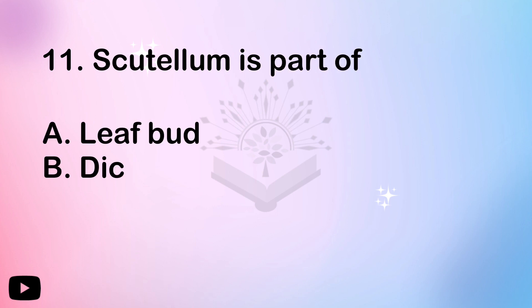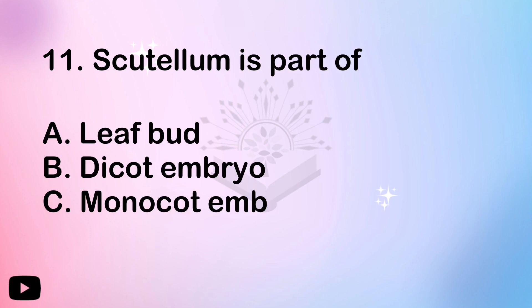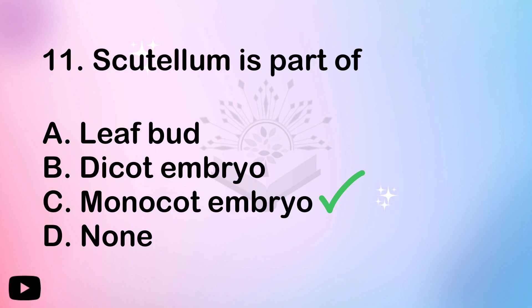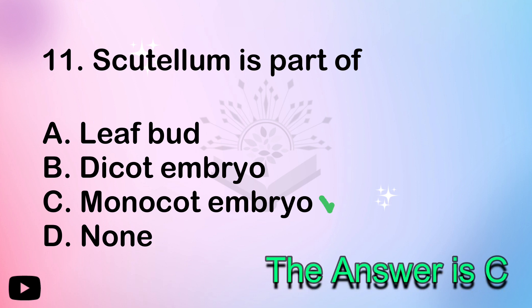Scutellum is the part of — it is one type of monocotyledon. The monocotyledon — the grass layer — is the layer of monocotyledons. Scutellum is part of the monocot embryo.